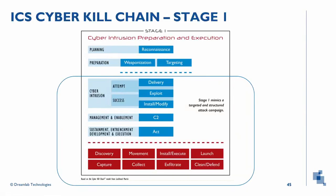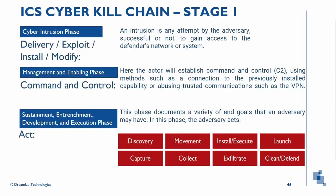We have now finished the preparation, weaponization, and targeting phase. The next step is cyber intrusion: management, enablement, sustainment, entrenchment, development, and execution. This is the moment we can act — we can deliver, exploit, install, or modify to gain access to the victim's system. We launch our command and control using methods such as connecting to a previously installed capability or abusing trusted communication such as VPN. In the sustainment, entrenchment, development, and execution phase, the adversary acts to discover, perform lateral movement, and carry out all activities known in common IT attacks.